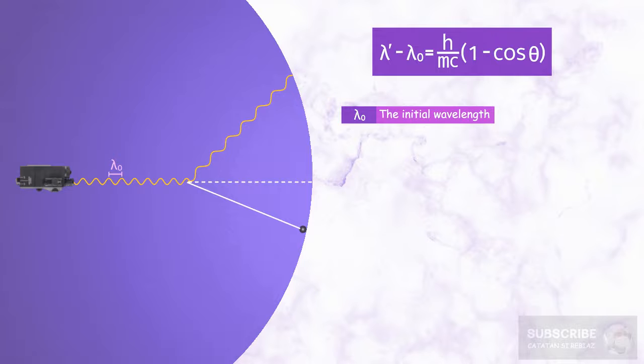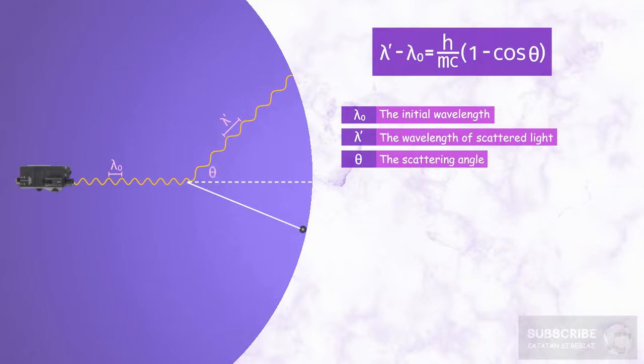Where lambda 0 is the original wavelength of X-ray, lambda prime is the wavelength of the scattered light, and theta is the scattering angle of light with respect to the original direction.